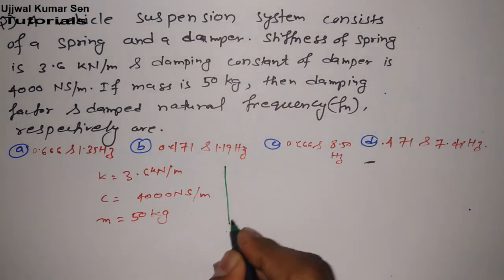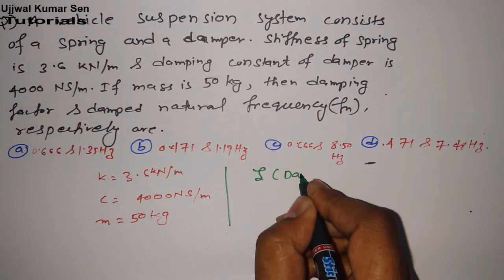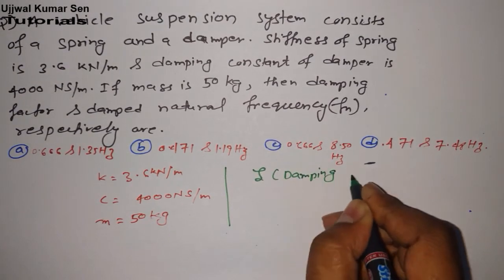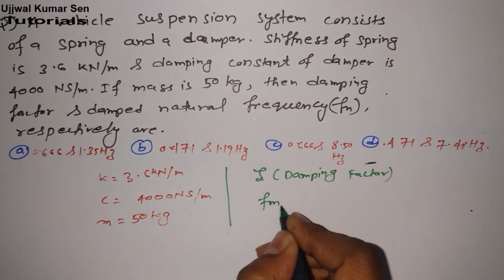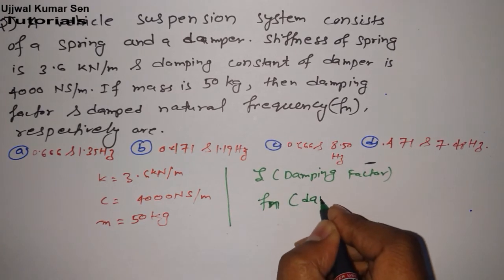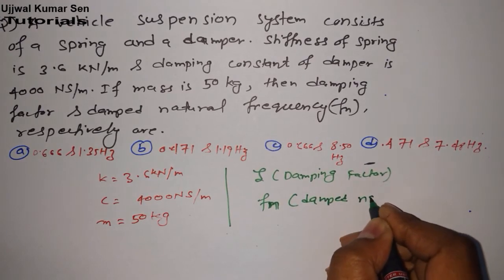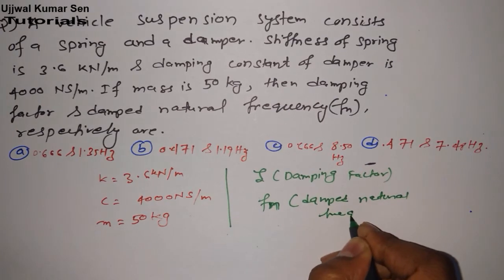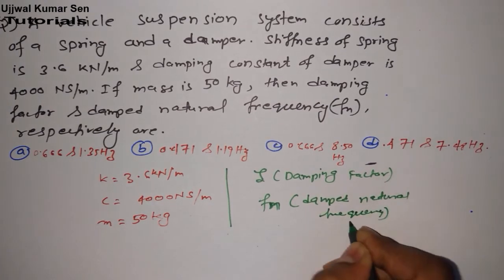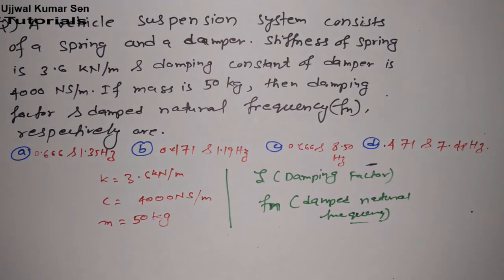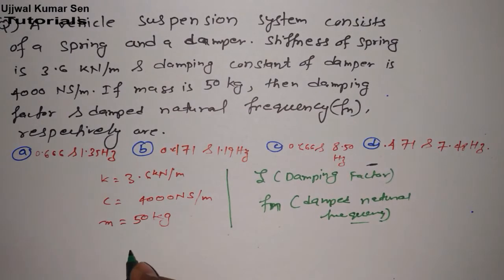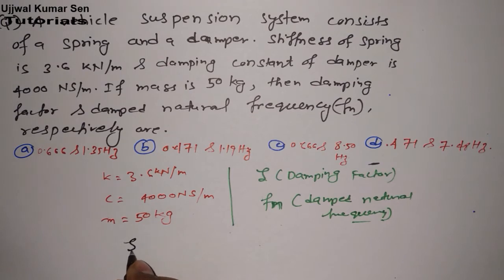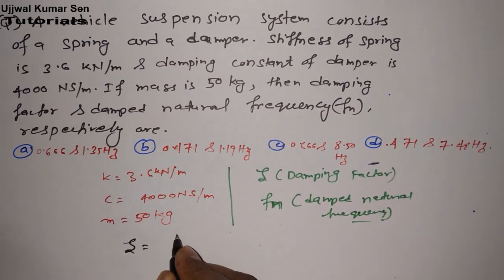Then we have to find out zeta that is known as damping factor and fn that is known as damped natural frequency. So they have asked this one. Now what we required, we need to find out damping factor first of all.